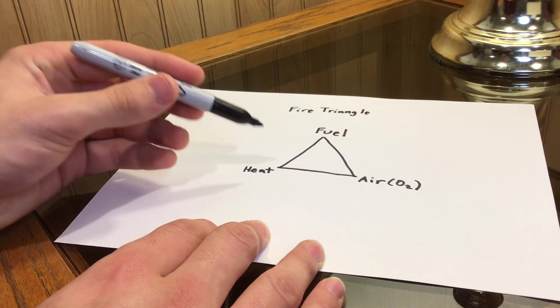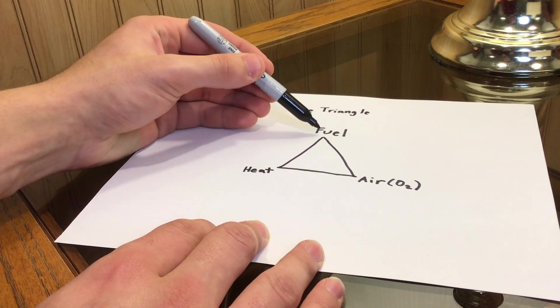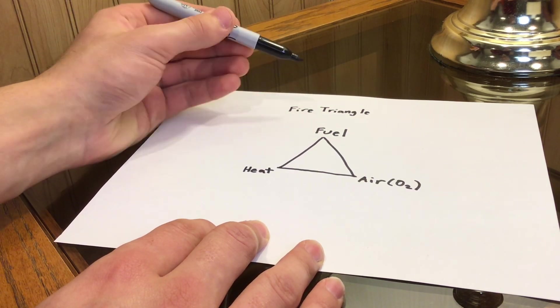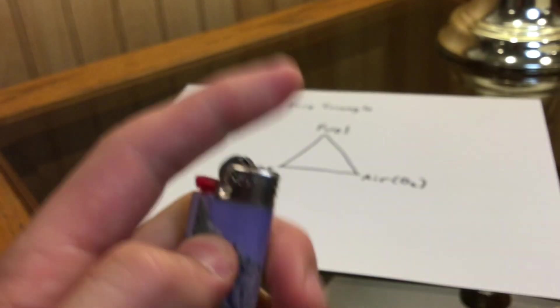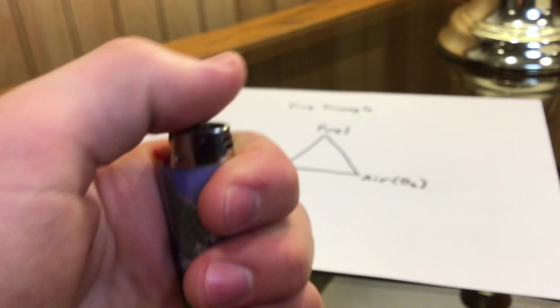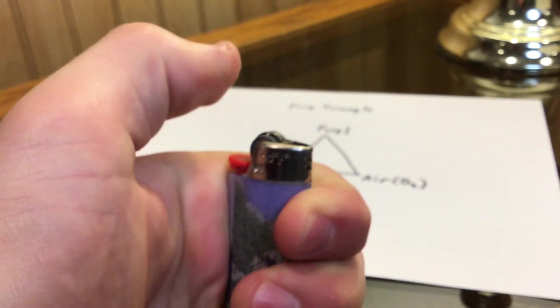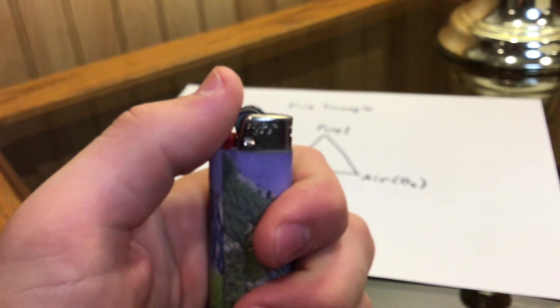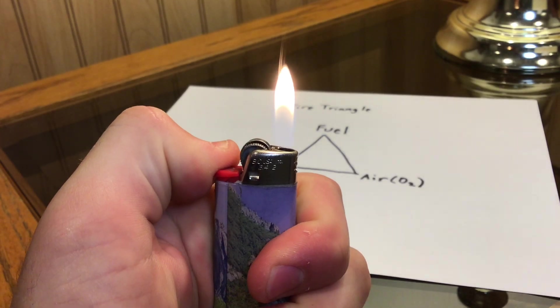With any one of these three elements missing, the fire will cease to exist. I'm going to show that with a couple demonstrations here. As you can see, simply releasing fuel does not create fire, and neither does its mixture with the air around you. Air and heat do not create fire, but when you put the three together, you do in fact get a flame.